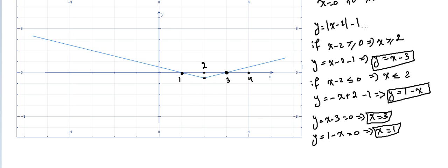Alternatively, setting absolute value of x minus 2 minus 1 equal to 0 gives absolute value of x minus 2 equal to 1, leading to the same two intersection points x equal 1 and x equal 3. Now we want to find the area from x equal 0 to x equal 4, so we have four parts based on the intersections at x equal 1 and x equal 3.